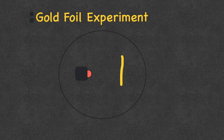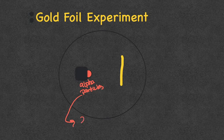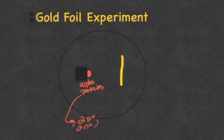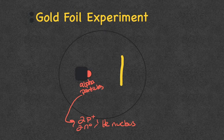Ernest Rutherford used this experiment called the gold foil experiment. There's this little box that shoots out alpha particles. An alpha particle is made of two protons and two neutrons — looking at the periodic table at number two, that's helium, so we call an alpha particle a helium nucleus. These alpha particles are being shot out towards a piece of gold foil.